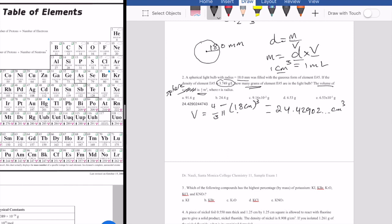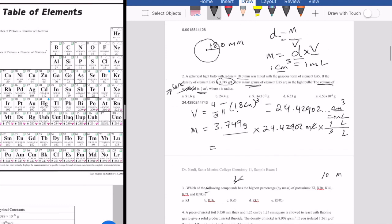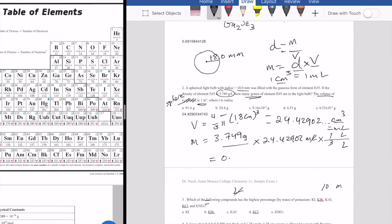My formula here is density times volume to get my mass, so that's what I'm going to do. Density here is given as 3.749 grams per liter. I'm going to multiply it by 24.42902 milliliters. And of course this wouldn't cancel. So if I want to convert that, then I have milliliter here to liter, and that would be one to 1000. Your answer here would be 0.09158 grams.